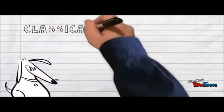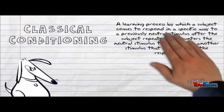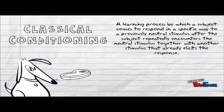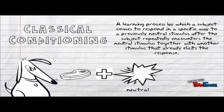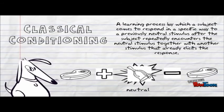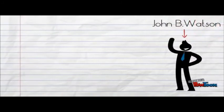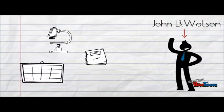Classical conditioning is a learning process that inspired behaviorism. By taking an unconditioned stimulus — the food that naturally caused the dogs to salivate — and combining it with something entirely neutral, the bell, Pavlov was able to remove the first stimulus and make something that was formerly neutral elicit the conditioned response. John B. Watson, an American psychologist, was intrigued by Pavlov's studies.